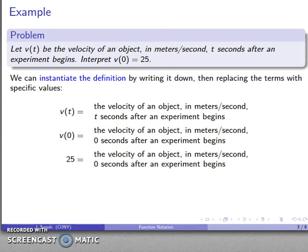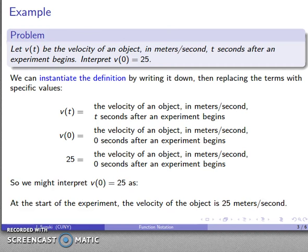So I'll make that next replacement. And so I have 25 is the velocity of an object in meters per second, zero seconds after the experiment begins. And so this suggests v(0) equals 25. We can read this as, at the start of the experiment, the velocity of the object is 25 meters per second.